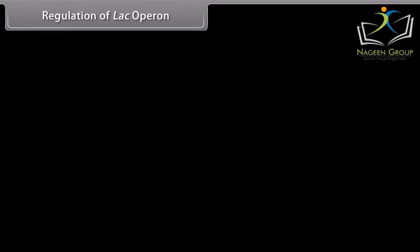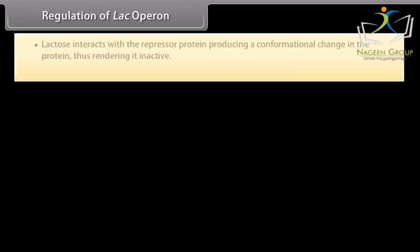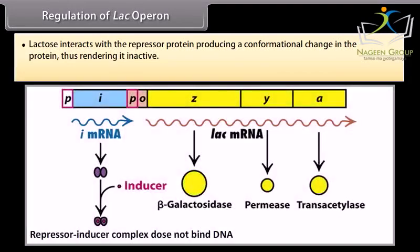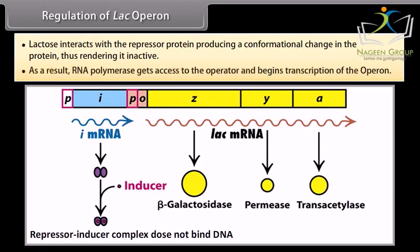When lactose is present, lactose interacts with the repressor protein producing a conformational change in the protein, thus rendering it inactive. As a result, RNA polymerase gets access to the operator and begins transcription of the operon.